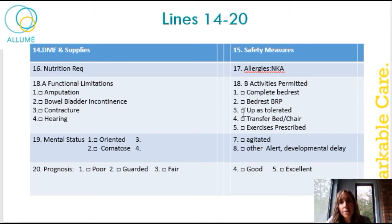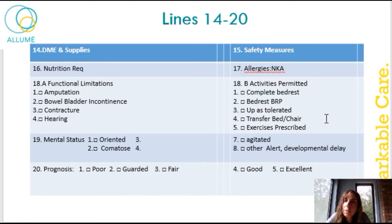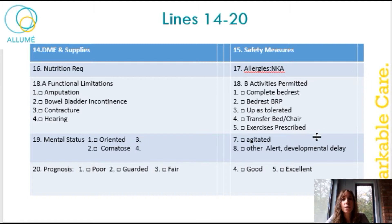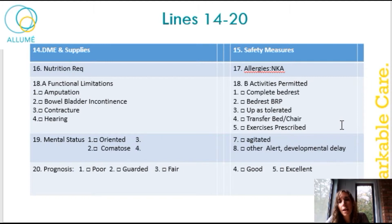Across from 18A is 18B, activities permitted. This is what your patient can do or is allowed to do, prescribed by the doctor — whether they're on complete bed rest, bed rest with bathroom privileges, up as tolerated, transfer bed to chair, or exercises prescribed. Exercises prescribed is extremely important because most of our patients have physical therapy and exercises to do at home. You will also notice that they have lists of things that the patient needs, such as wheelchair, cane, Hoyer lift, and so on.